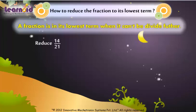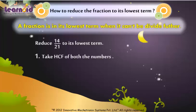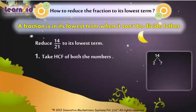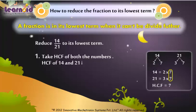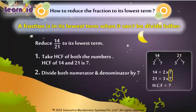Reduce 14 by 21 to its lowest term. Take the HCF of both numbers. The HCF of 14 and 21 is 7. Divide both numerator and denominator by 7.